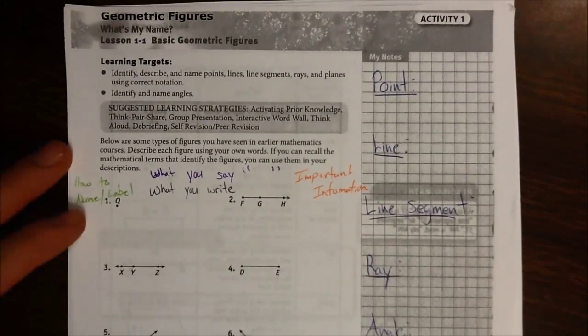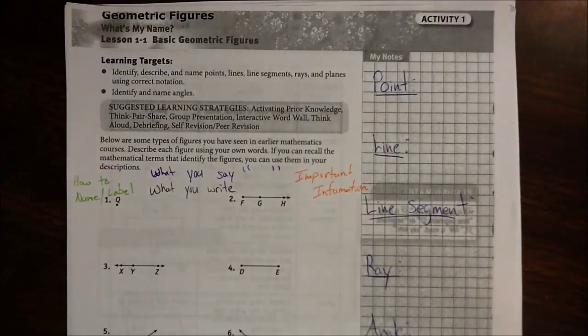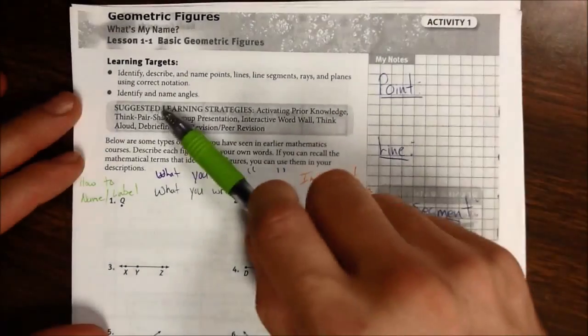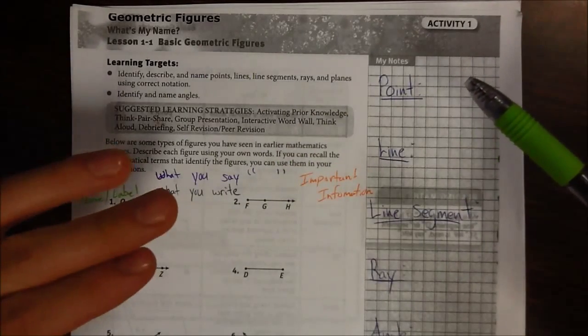But for this lesson, 1-1, our learning target. So what are we supposed to know when we're all said and done with this? Well, we need to be able to do three things: identify, describe, and name.